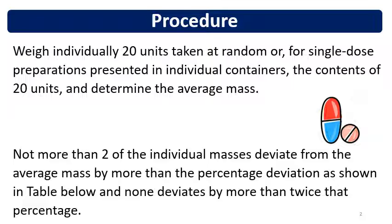For capsule formulations, the contents of 20 capsules are removed and the average of those 20 weights is taken. Limits are given as per pharmacopoeia requirements: not more than 2 of the individual masses deviate from the average mass by more than the percentage deviation shown in the table. And none deviate by more than twice that percentage.